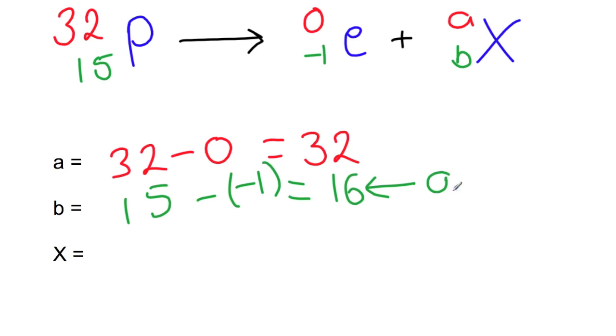So as before, this is an atomic number. So look this up in your data book. And this will allow you to find the symbol for X. If you look up atomic number 16 in the data book, you will find that that is sulfur. So that will give you a symbol S.